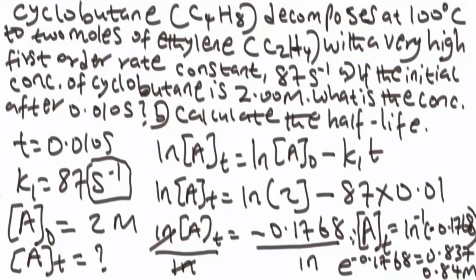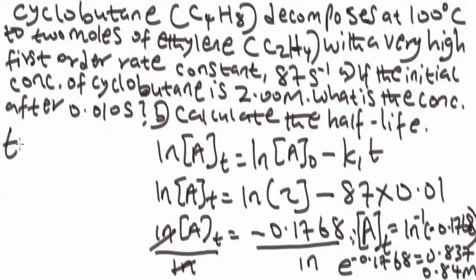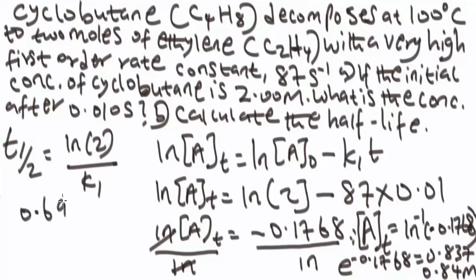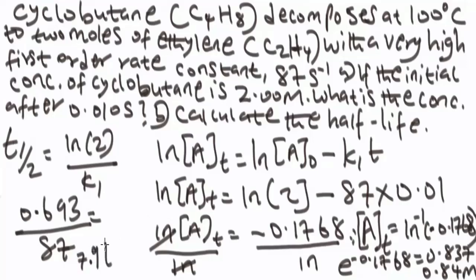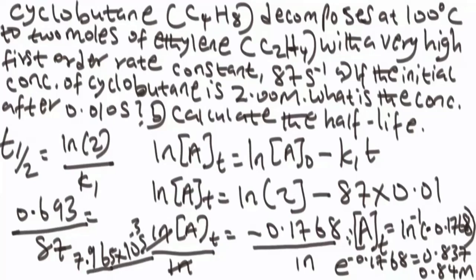To calculate the half-life: t_(1/2) = ln(2) over k_1 = 0.693 over 87 per second. When you punch it in the calculator, you get 7.965 times 10 to the power minus 3 seconds (to three decimal places). This will be the half-life of this first order reaction.